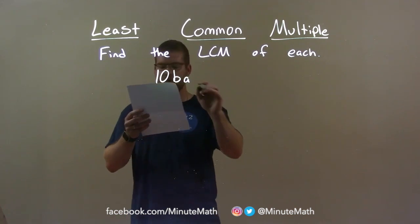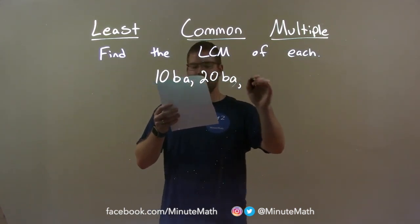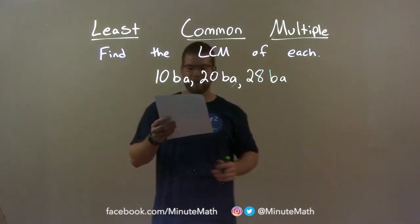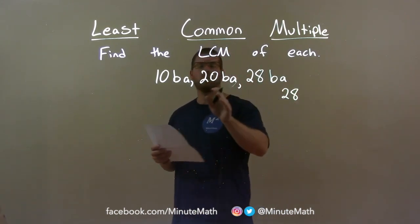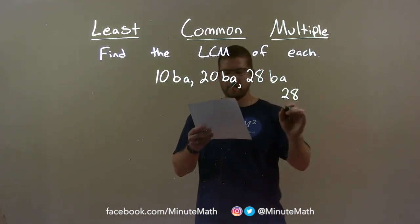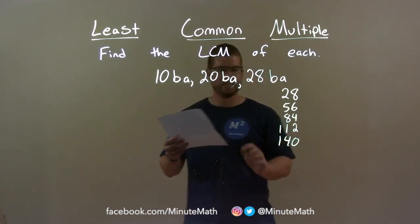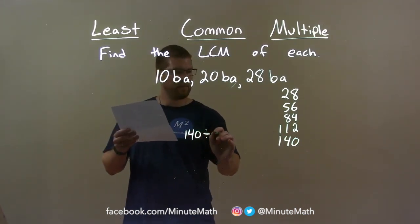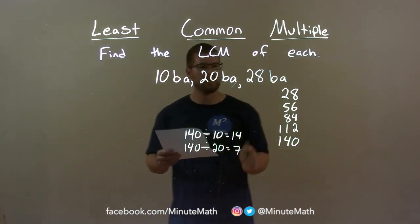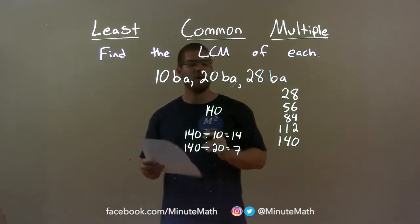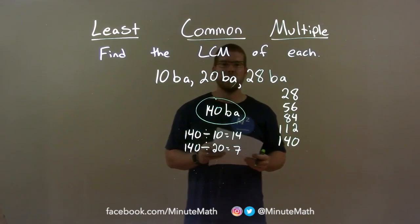10BA, 20BA, and 28BA. My largest number is 28, so I go through the multiples of 28 to find which one is divisible by both 20 and 10. 28, 56, 84, and 112 are not, but 140 is. 140 divided by 10 is 14, and 140 divided by 20 is 7. So 140 is the first multiple of 28 divisible by the other two. For the variables, each term has BA, so it's just BA. My final answer is 140BA.